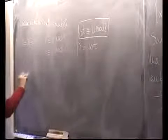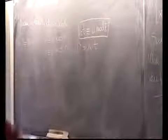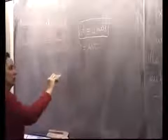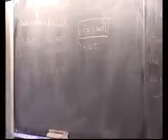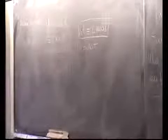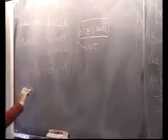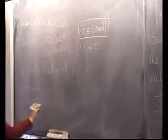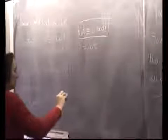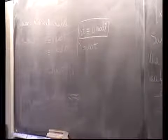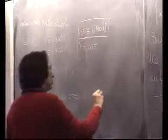Dobbiamo trovare i valori di t che soddisfano 10t ≡ 4 (mod 8). Una congruenza è risolubile se e solo se il massimo comune divisore tra i coefficienti divide il termine noto: mcd(10, 8) divide 4? Sì, 2 divide 4. Ecco la condizione generale: il sistema x ≡ b1 (mod n1), x ≡ b2 (mod n2) ha soluzioni se e solo se mcd(n1, n2) divide b1 − b2. Abbiamo completato il teorema cinese con un se e solo se.